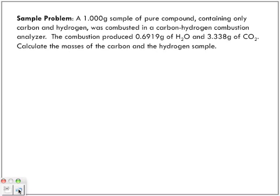Let's look at actual sample problems. A 1.000 gram sample of a pure compound containing only carbon and hydrogen was combusted in a carbon hydrogen combustion analyzer. The combustion produced 0.6919 grams of water and 3.338 grams of carbon dioxide. Calculate the masses of carbon and hydrogen in the sample.